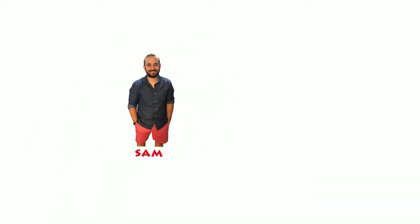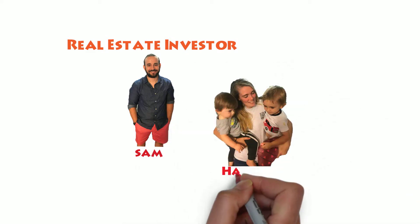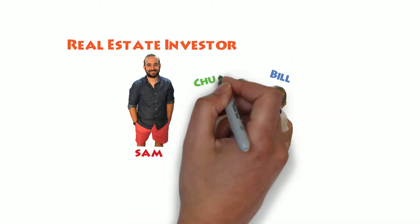What's up guys? My name is Sam Barton. I'm a 24-year-old real estate investor and entrepreneur. I have a beautiful wife named Hannah and two incredible boys named William and Charles.